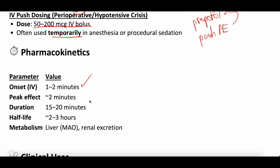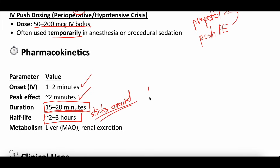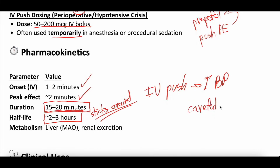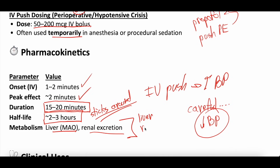Pharmacokinetics: onset of action is really quick, within one to two minutes. Peak effect is within two minutes. The duration is a little longer — it can last 15 to 20 minutes with a half-life of actually two to three hours. So phenylephrine sticks around a lot longer than many vasopressors. If a patient gets an IV push of phenylephrine and their blood pressure goes up, you still have to be careful because when it wears off, the blood pressure might drop again. With a half-life of two to three hours, that drop could be delayed. Phenylephrine is metabolized in the liver and excreted by the kidneys, so caution is needed in patients with severe liver or renal dysfunction.